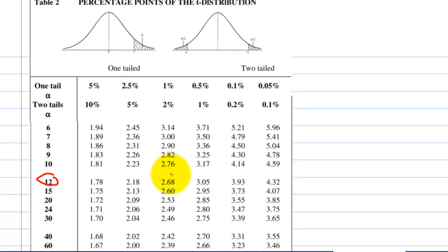1% 1-tail is 2.68. So that means that this number is 2.68. And since we are looking at the opposite side, this value is negative 2.68.